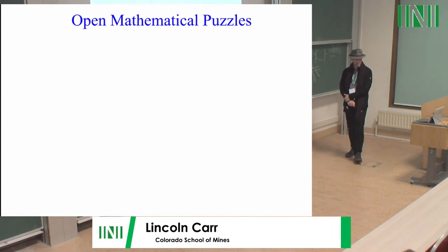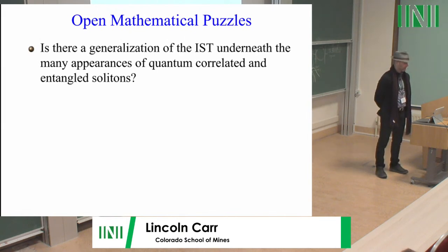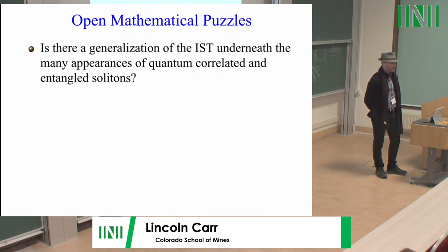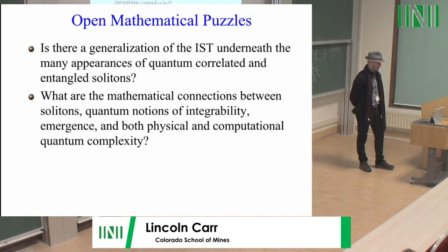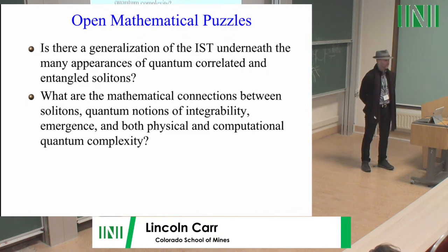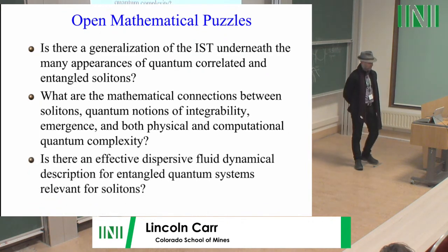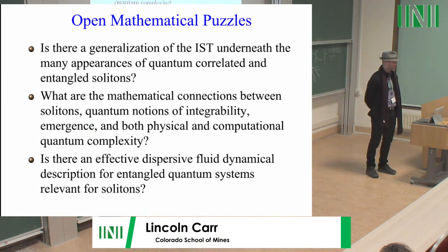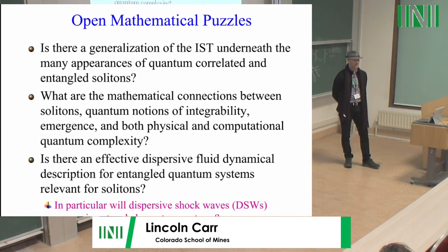I want to leave some open mathematical puzzles. First: is there a generalization of the inverse scattering transform underneath the many appearances of quantum-correlated and entangled solitons? Second: what are the mathematical connections between solitons, quantum notions of integrability, and emergence in both physical and computational quantum complexity? Third: is there an effective dispersive fluid dynamical description for entangled quantum systems relevant for solitons? In particular, will dispersive shock waves appear in entangled quantum systems, and might that be something you could see in a quantum circuit? With that, I thank you.